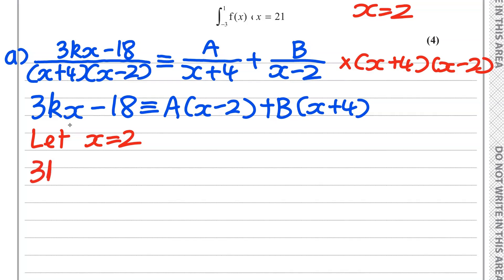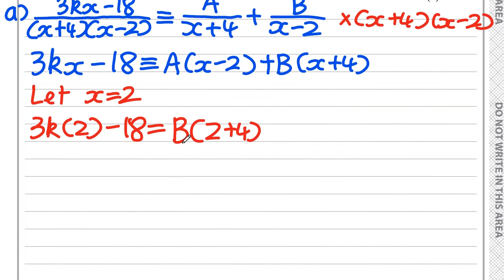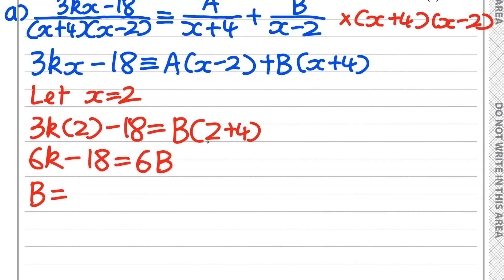Substituting x = 2: the left side gives 3k(2) − 18 = 6k − 18. The A(x − 2) term becomes zero and cancels, leaving 6k − 18 = B(2 + 4) = 6B. Dividing both sides by 6 gives B = k − 3.